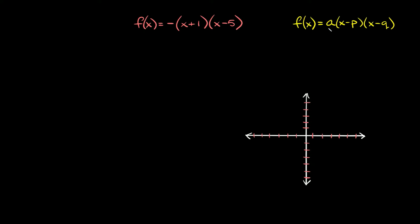The first coefficient a is just a positive or negative number. When it's positive, your parabola is going to open up, and if a is negative, your parabola opens down. Then p and q are your x-intercepts — the only special thing to remember is to take the opposite sign of both of these when you write down your x-intercepts.